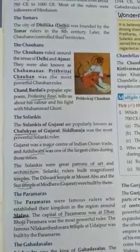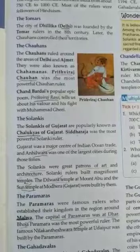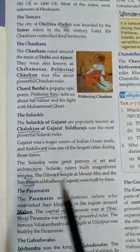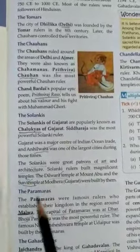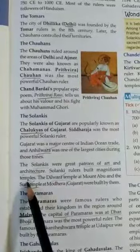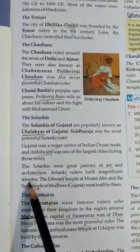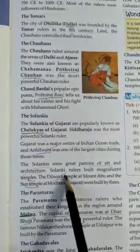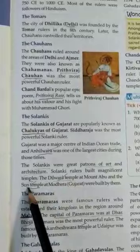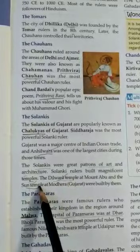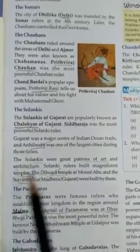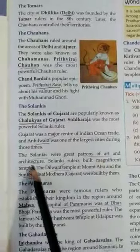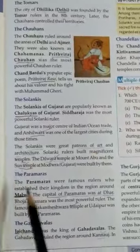The Solankis were great patrons of art and architecture, and they built many temples. The Tilwara temples and the Sun Temple are examples of their art and architecture. The Paramaras were famous rulers who established their kingdom in the region around Malwa, in the northern part of the Deccan.